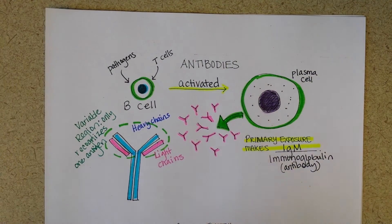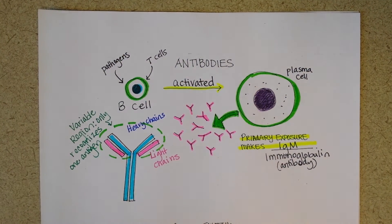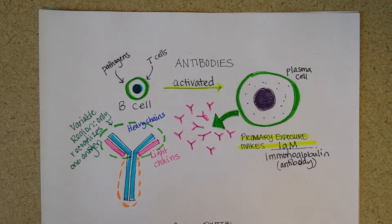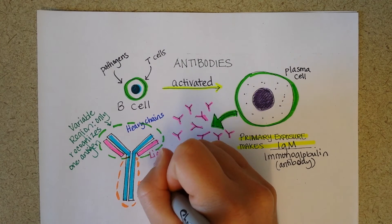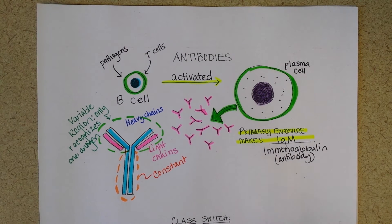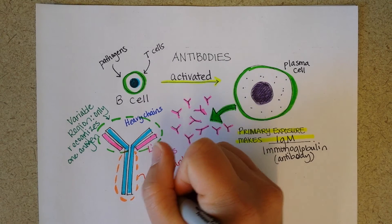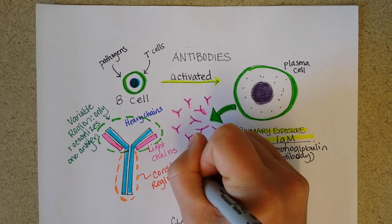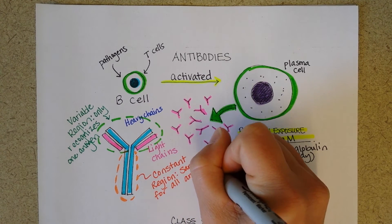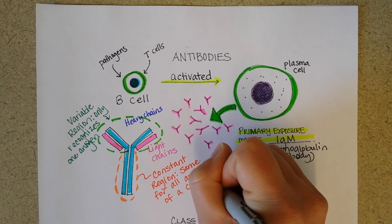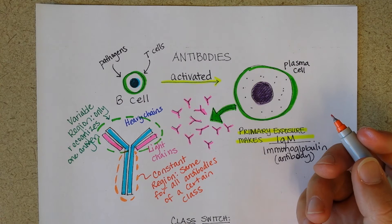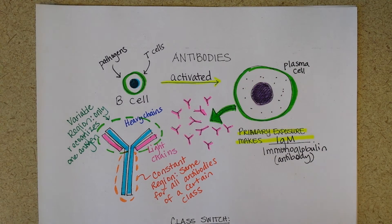The constant region is called constant because it's going to be the same for all antibodies of that type, like IgM or IgE. So the constant region is the same for all antibodies of a certain class — for example, there's IgA, IgG, IgE, and also IgM antibodies.